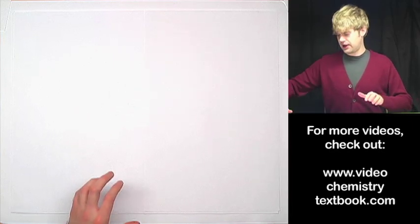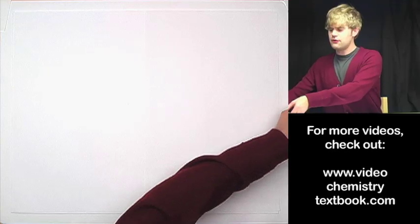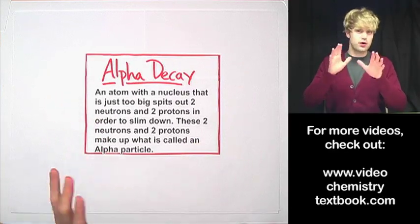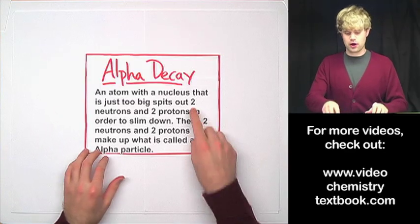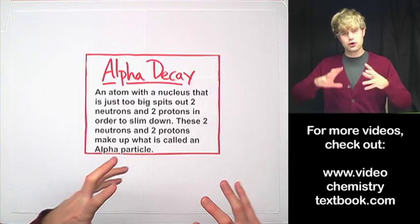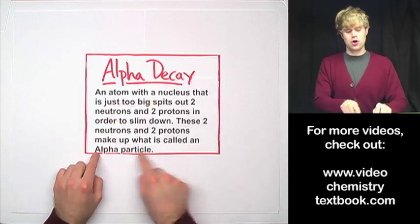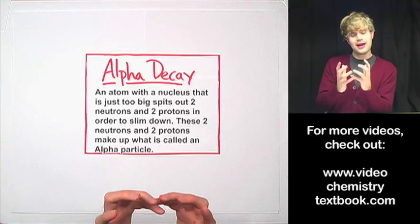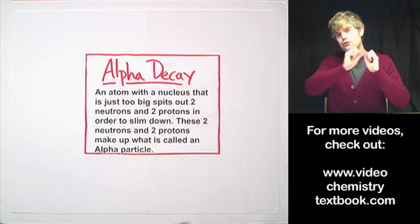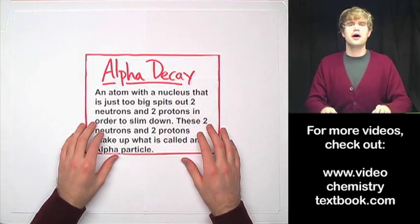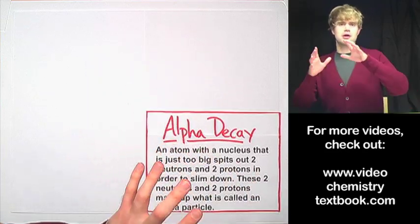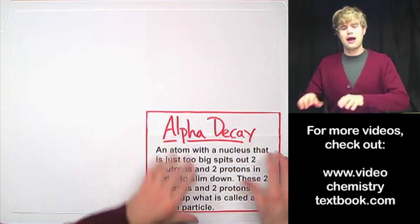Let's look at what happens in alpha decay. In alpha decay, an atom with a nucleus that is just too big — that's what it is unhappy about — spits out two neutrons and two protons in order to slim down. These two neutrons and two protons come together and make up what is called an alpha particle. So we have this unhappy atom that wants to slim down, spits out two protons and neutrons, they go flying out into space, and we call that an alpha particle. Let's take a look at how we'd write some chemical equations that involve alpha decay.